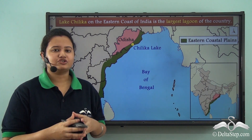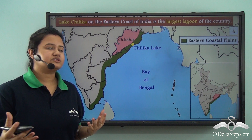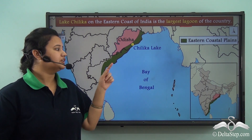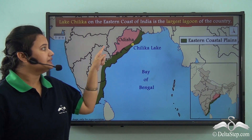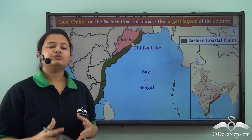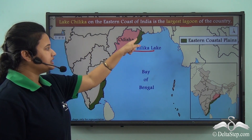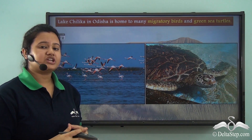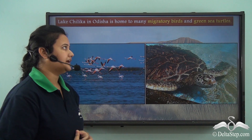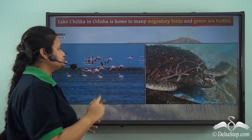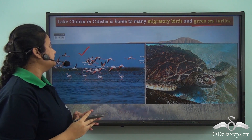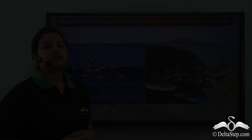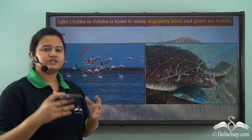Another interesting feature of the eastern coastal plain is the presence of lagoons. Lagoons are saltwater lakes which were once part of a huge sea but got separated from the main body of water. The largest lagoon of India is Chilka Lake, which is part of the eastern coastal plains and belongs to the state of Orissa. Chilka Lake is rich in biodiversity and contains some endangered species like green sea turtles, as well as migratory birds and various fish, making it an important tourist attraction of Orissa.